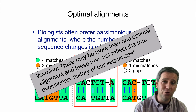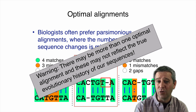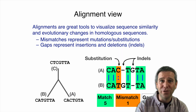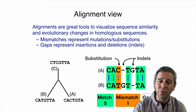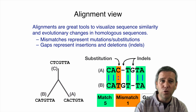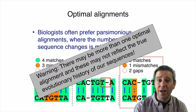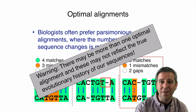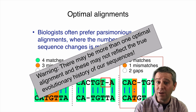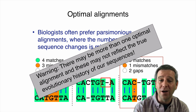An important warning: optimal alignments may not reflect the true evolutionary history of these sequences. When we considered those three alignments, probably nobody picked the correct one — the third one, which I walked through in detail showing five matches, one mismatch, and two gaps reflecting the actual evolutionary trajectory. Certainly when I do this in class, no one picks that alignment. So more than one optimal alignment can exist, and they don't even have to be correct — they don't have to reflect the true evolutionary history.